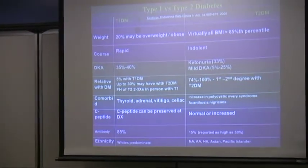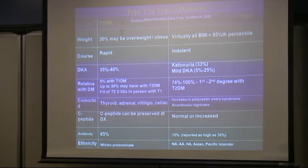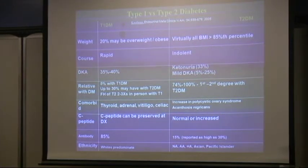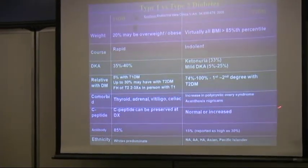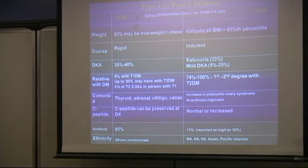This summary helps differentiate type 1 and type 2 diabetes in children. The disease course is important: DKA is definitely more common in type 1, though it can also occur in type 2. Family history is strongly associated with type 2. In type 2, associated comorbidities include PCOS, acanthosis nigricans, elevated blood pressure, and dyslipidemia.